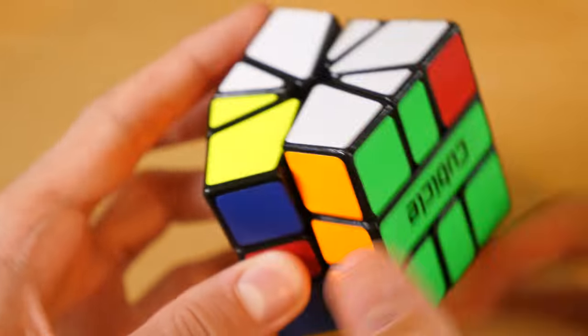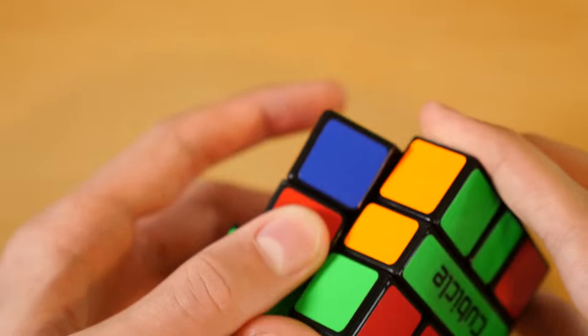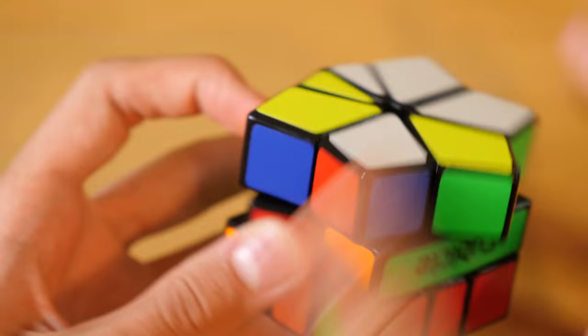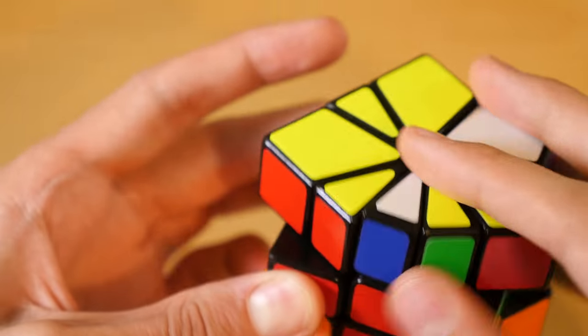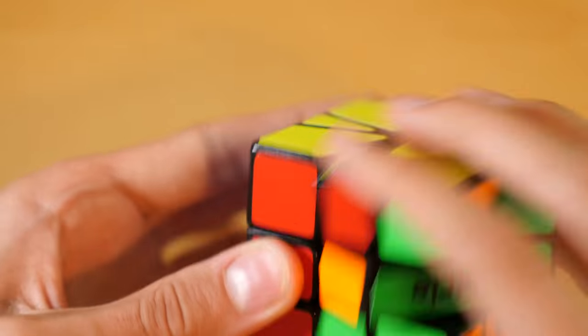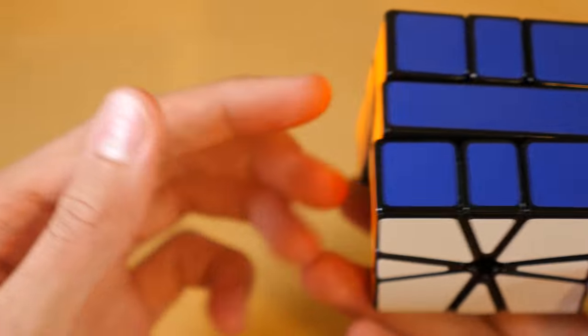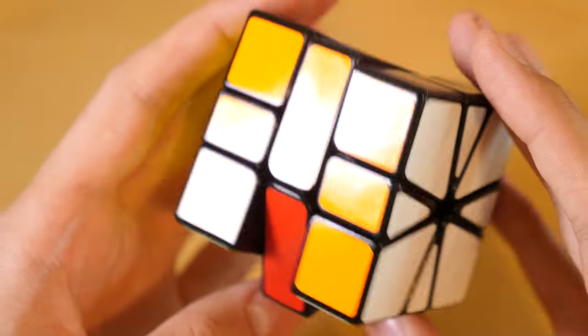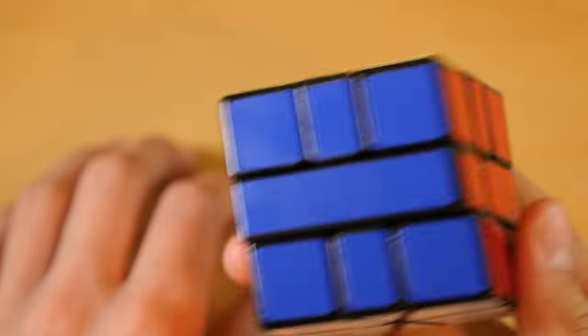If you want to get into Square-1, this does seem like it's going to be the best option, other than like getting the Chi and doing all the mods yourself and everything. I got mine stickered with my normal half-bright shades. I really like half-brights and these look really nice.